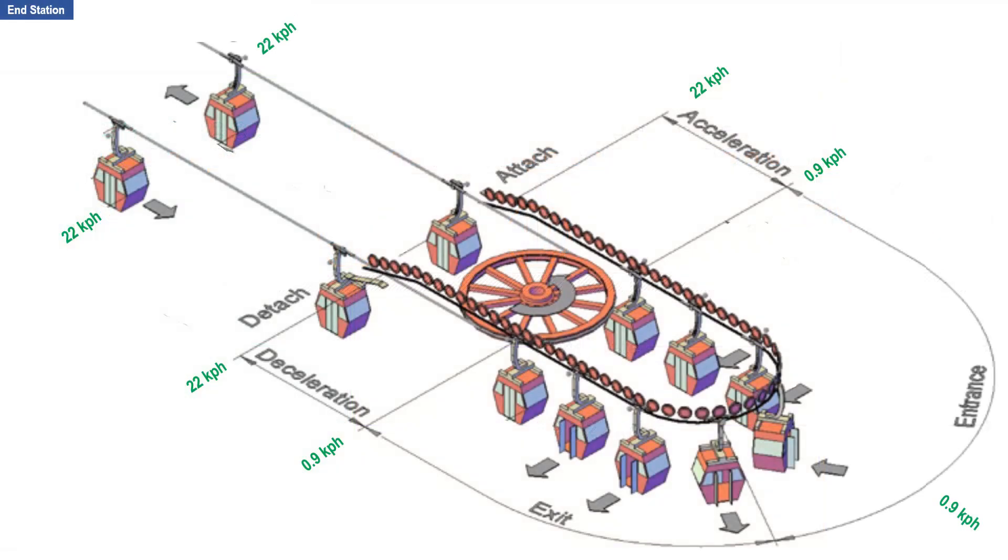What is shown previously is the movement of the cabins at the intermediate stations. Let us look at how cabins detach at end stations. This cabin travels at a constant speed of 22 km per hour. This cable is being propelled by this bull wheel in a counter-clockwise direction. When the cabin reaches this point, the cabin grip instantaneously detaches from the cable. Simultaneously, the tire conveyor takes over and decelerates the cabin. When the cabin reaches here, the speed becomes 0.9 kph. A few seconds later, the door automatically opens.